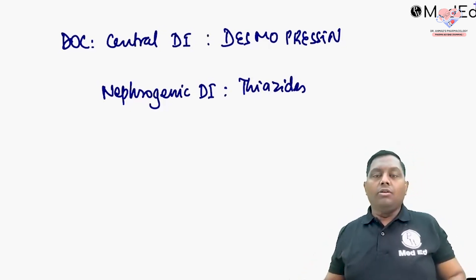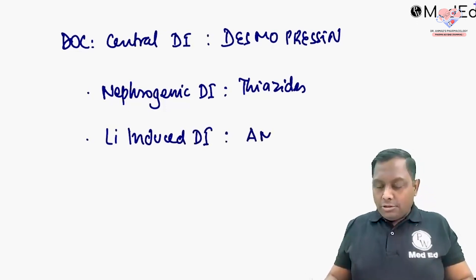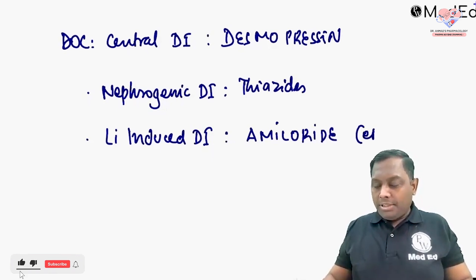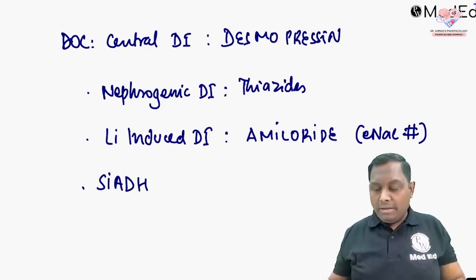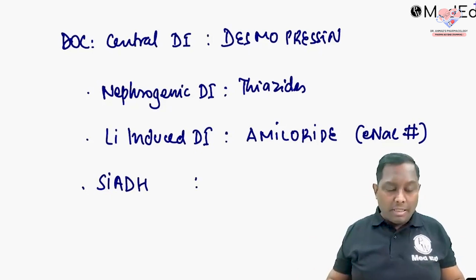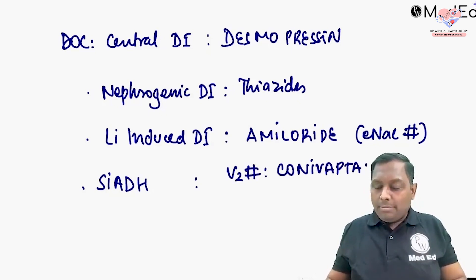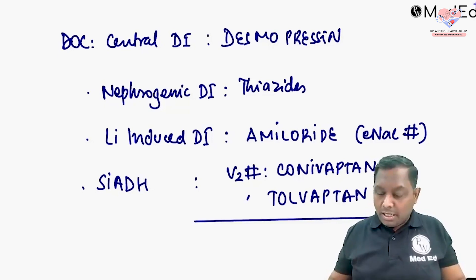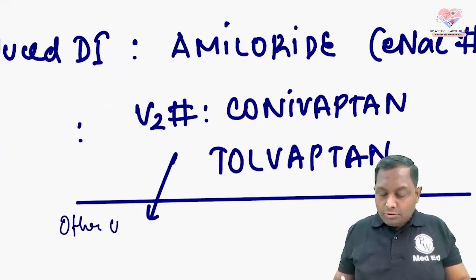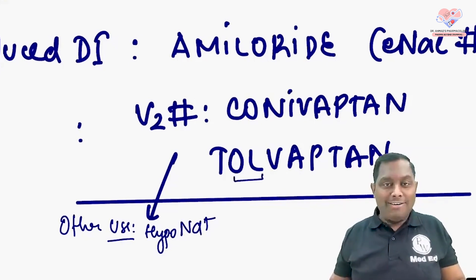More cyclic AMP-mediated aquaporin generation causes water reabsorption. For lithium-induced diabetes insipidus, the answer is amiloride, which is an epithelial sodium channel blocker — because lithium uses the same sodium channel to enter the body. For SIADH, since too much ADH is stimulating V2 receptors, we give a V2 receptor blocker. The V2 receptor blockers are conivaptan and tolvaptan.